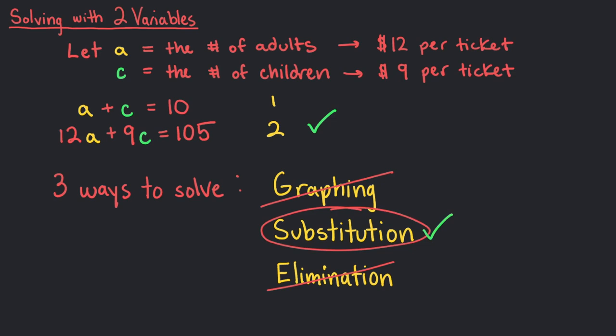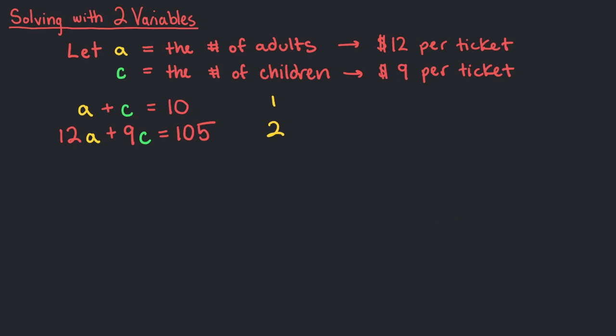With substitution, we will focus only on one equation to solve for a or c. In this case, we will solve for c, but in general, it doesn't matter. However, we should always be solving a and c in the most convenient way possible. Which equation is easier to solve for c?